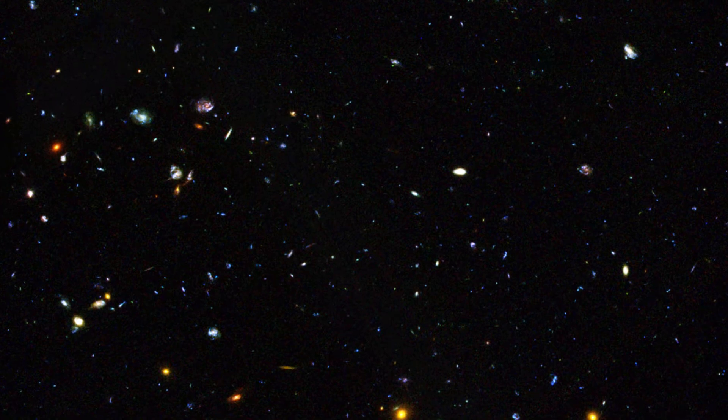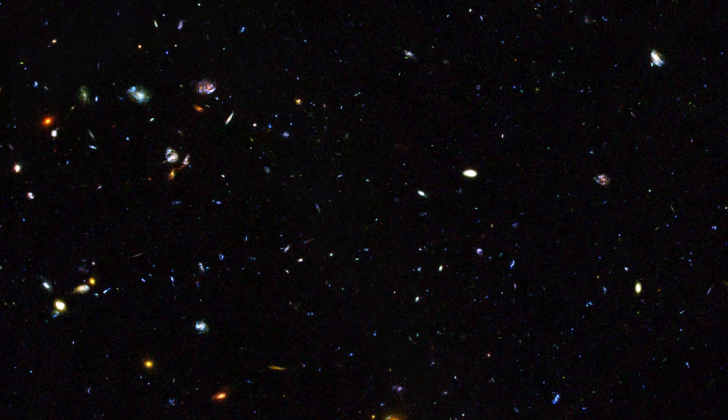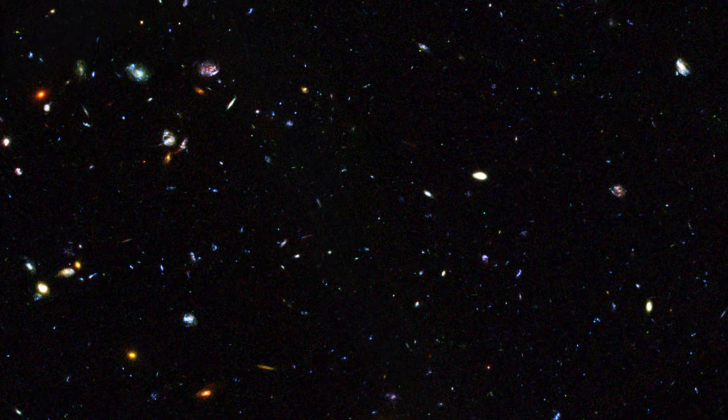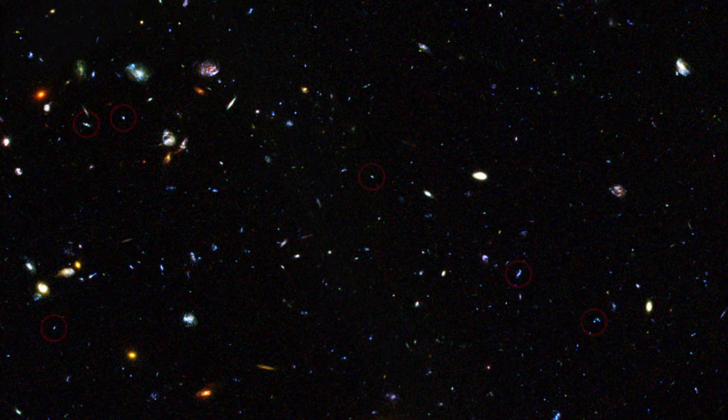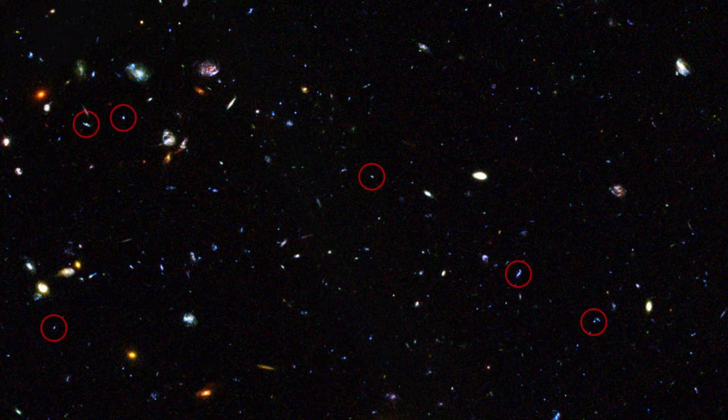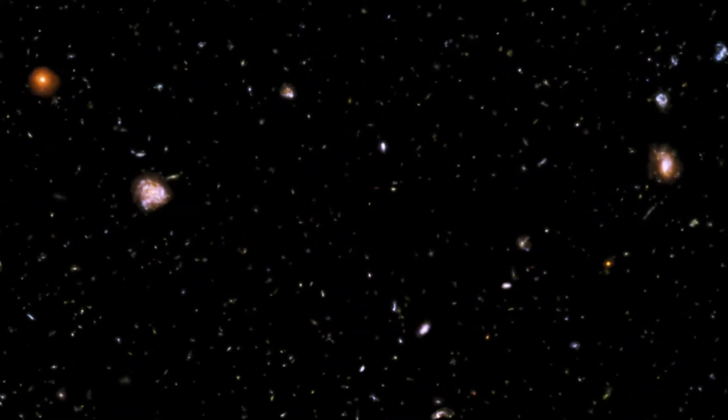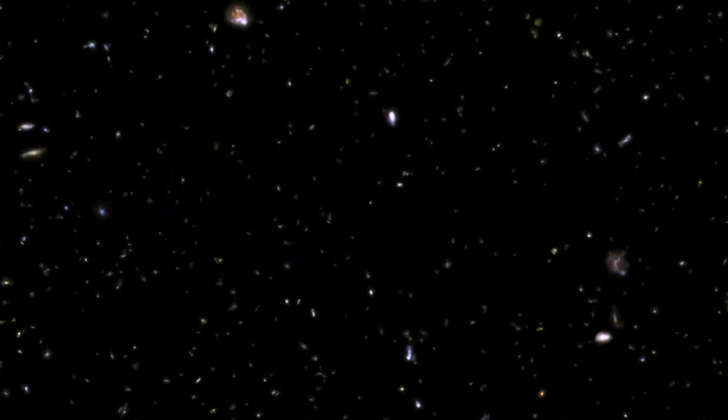They think that some 90% of the galaxies in the Universe are actually too faint and too far away to be observed by the current generation of telescopes. Astronomers can only infer their existence based on models and calculations.